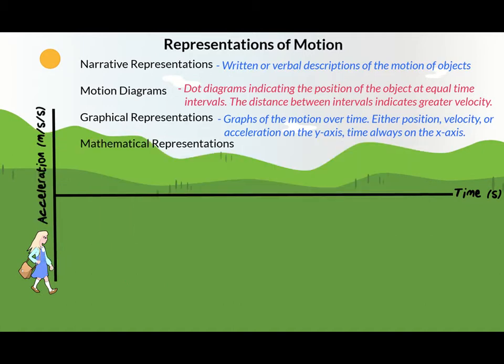How can motion be depicted on an acceleration-time graph? An AT graph is set up the same way as a VT graph. For the apple tossed in the air, the slope of the VT line showed a constant negative acceleration, so we simply draw a horizontal constant acceleration in the negative direction on our AT graph. This leads us to our final type of representation of motion — mathematical representations.